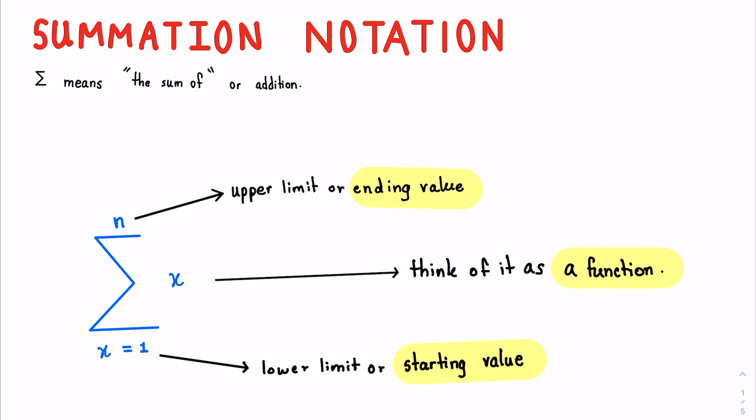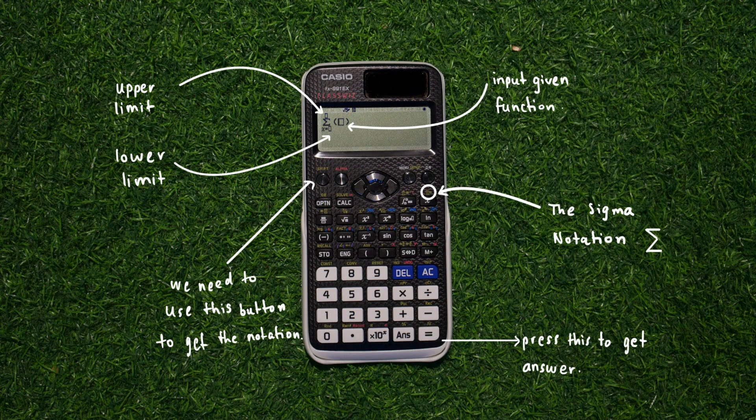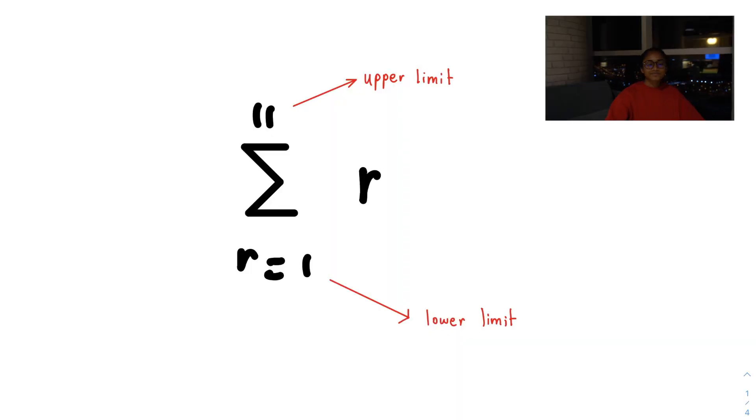So if you haven't already, go look at my Sigma notation video, and now we'll get into this one. So just for the record, in this video, we're going to be using the Casio FX991EX called the ClassWiz.